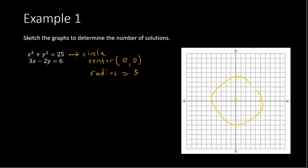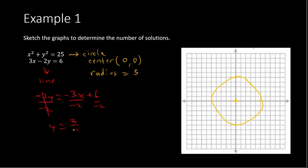The other equation, 3x minus 2y equals 6, is a linear equation — nothing is squared. We put it in slope-intercept form by subtracting 3x from both sides to get negative 2y equals negative 3x plus 6, then dividing by negative 2 to get y equals (3/2)x minus 3. The slope is 3/2 and the y-intercept is negative 3. We go down 3 to the y-intercept, then up 3 and over 2 to get our line.